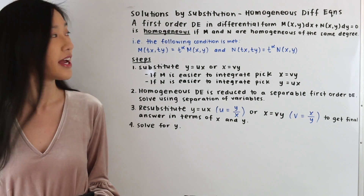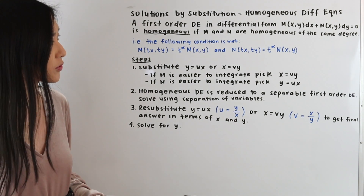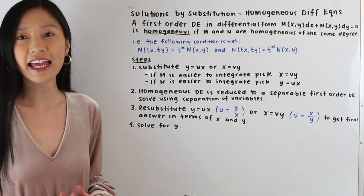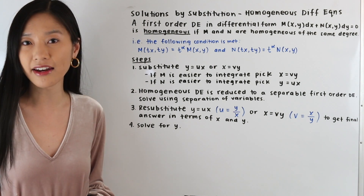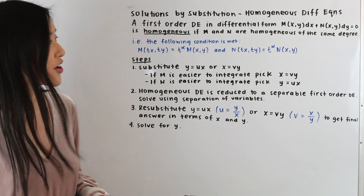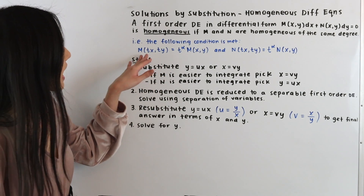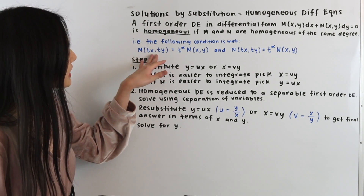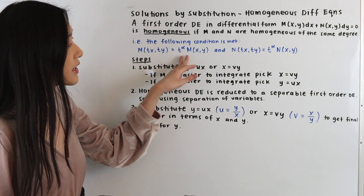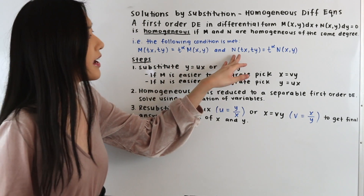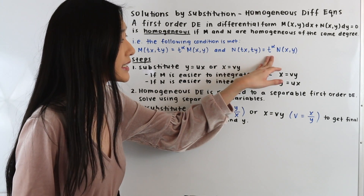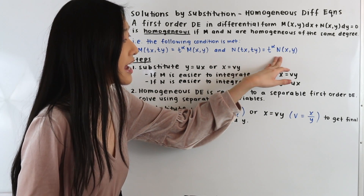A first-order differential equation in differential form is homogeneous if M and N are homogeneous of the same degree. In other words, this means that M of tx, ty is equal to t to the alpha times M of xy, and N of tx, ty is equal to t to the alpha times N of xy.